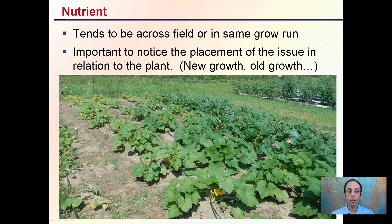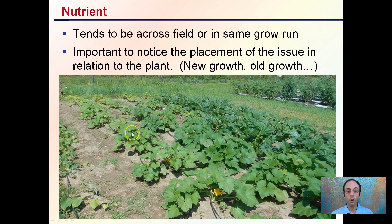For nutrients, they tend to be across the field or in the same kind of run that we may see in a grow operation. It's important to notice the placement of the issue in relation to the plant — is it new growth or is it older growth? This is an example of a nutrient deficiency: nitrogen in a cucurbit field. Here we could see low nitrogen, and as we progress this way, we get into more nitrogen. Through heavy rains, the nitrogen was leaching out and running down the hill, allowing these to have the proper amount of nitrogen while these became deficient. You can see that trend occurring in the field, and trends are common with nutrient issues.